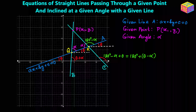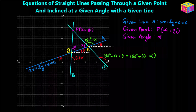We need to find the equations of line b and line c. We already know one piece of information — the point P and its coordinates. Both lines b and c pass through point P. So if we can find the slope of line b and line c, we can easily write their equations using the point-slope form.